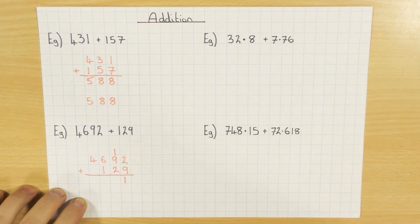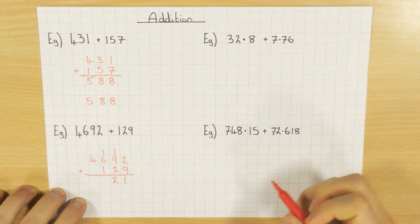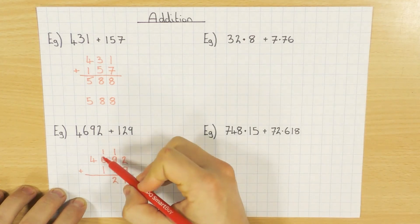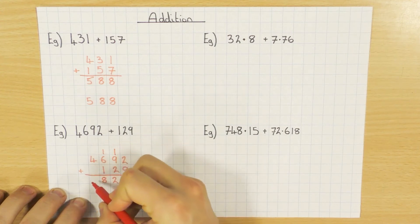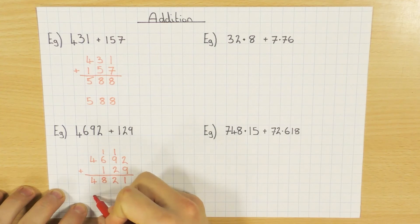Okay, so let's do it then. 1, add 9 is 10. Add 2 is 12. So the 2 goes there. Carry the 1 over again at the top there so I don't forget to add it now. 1, add 6 is 7. Add 1 is 8. And 4, add nothing is 4. So I have 4,821.